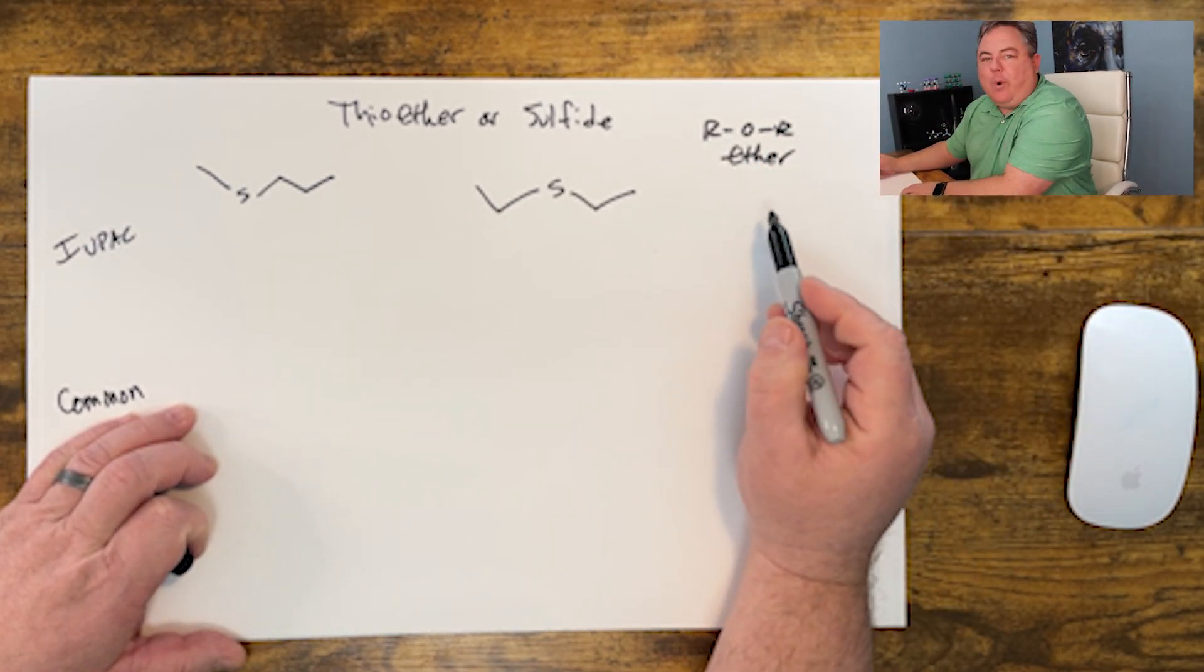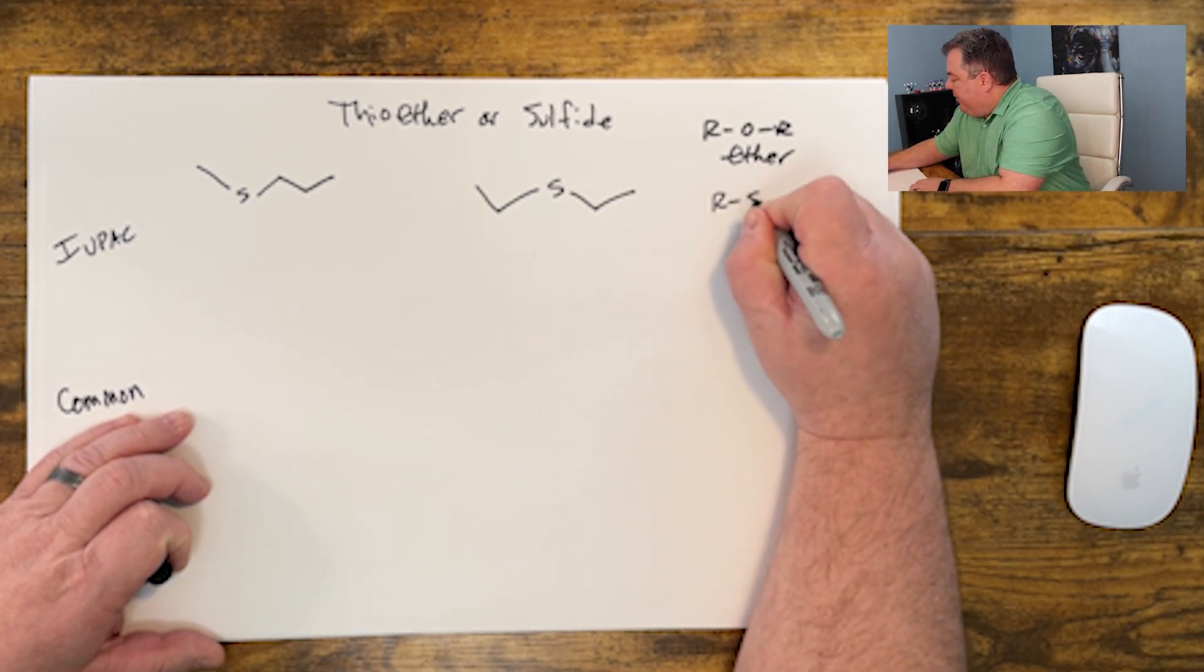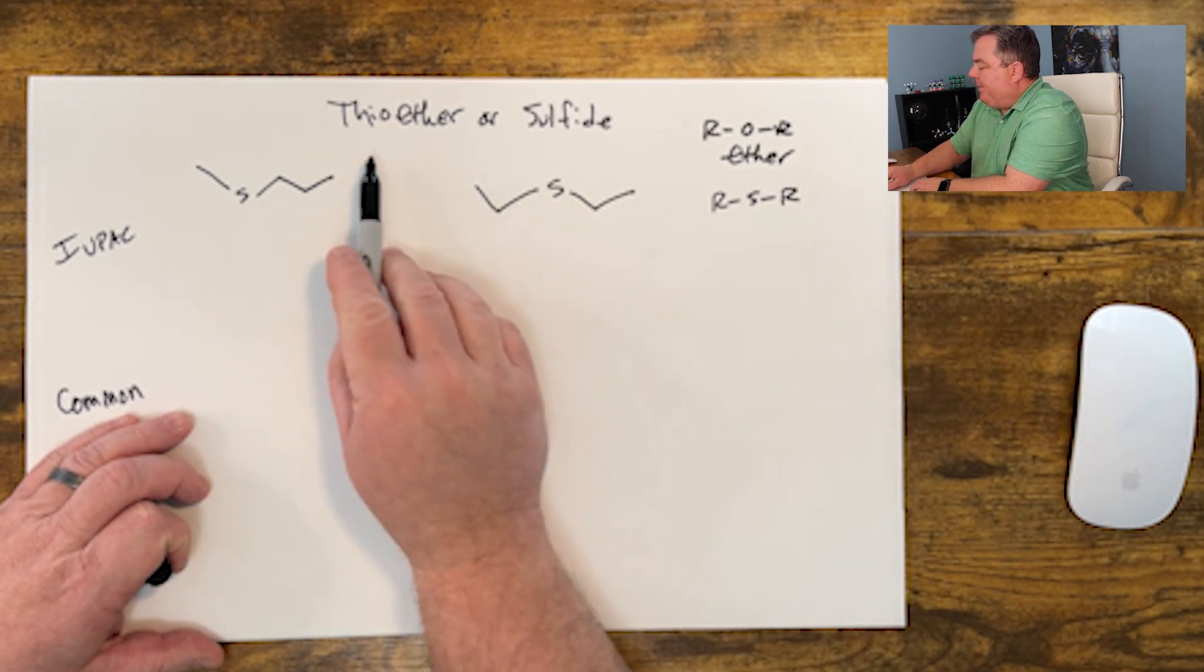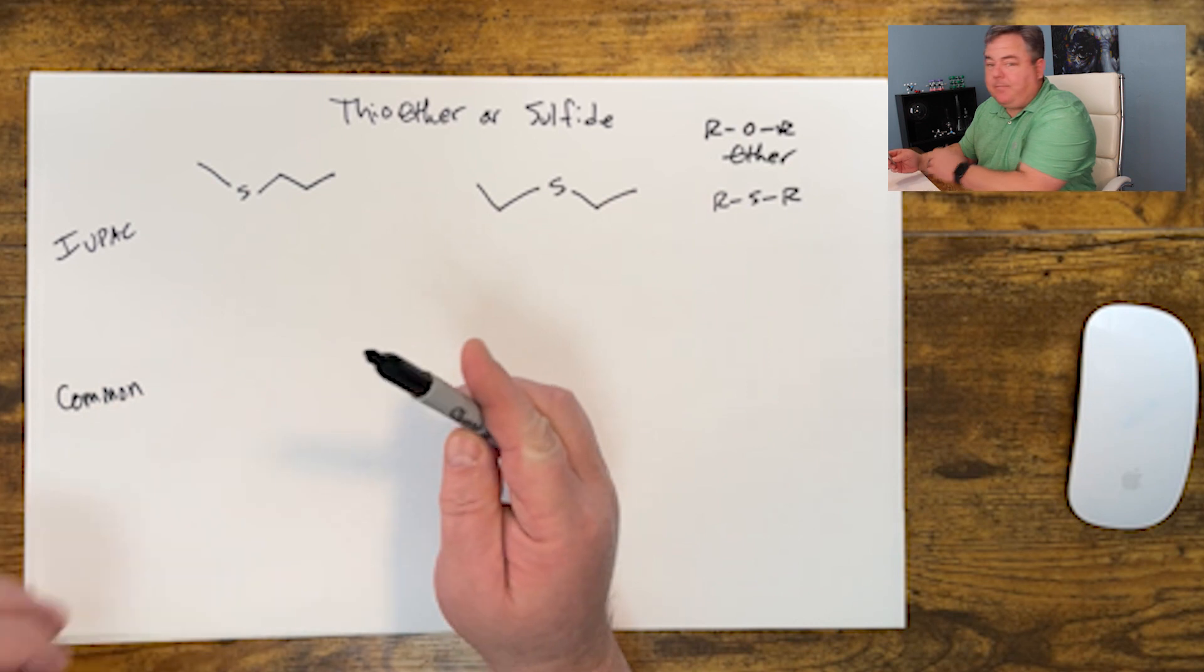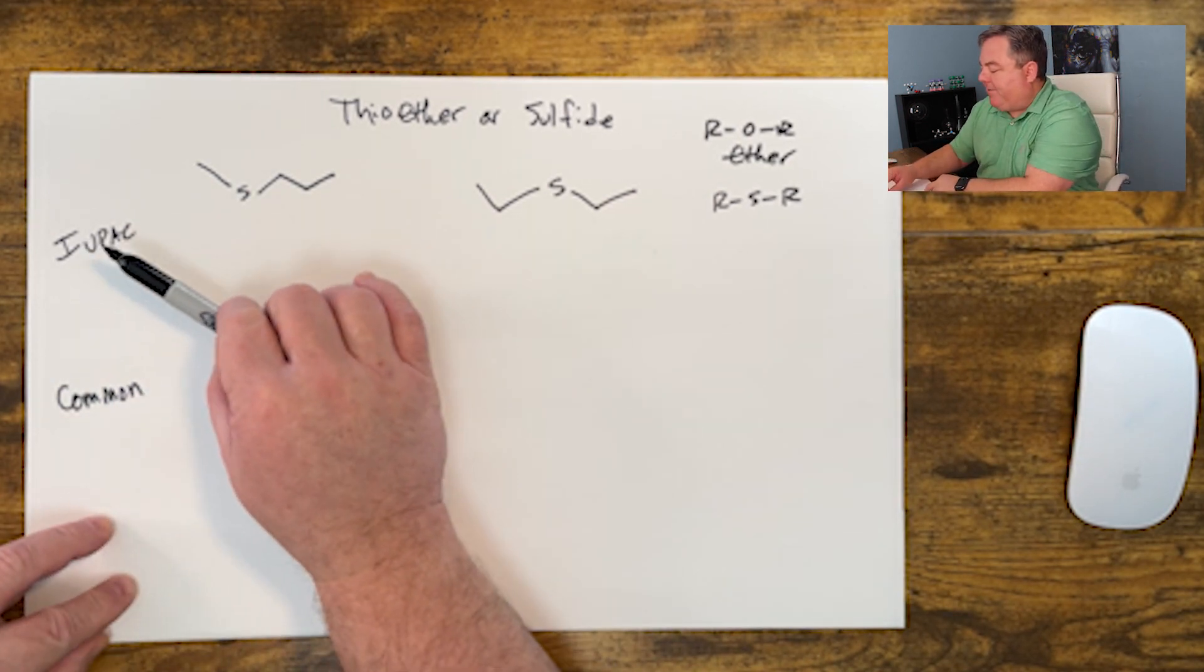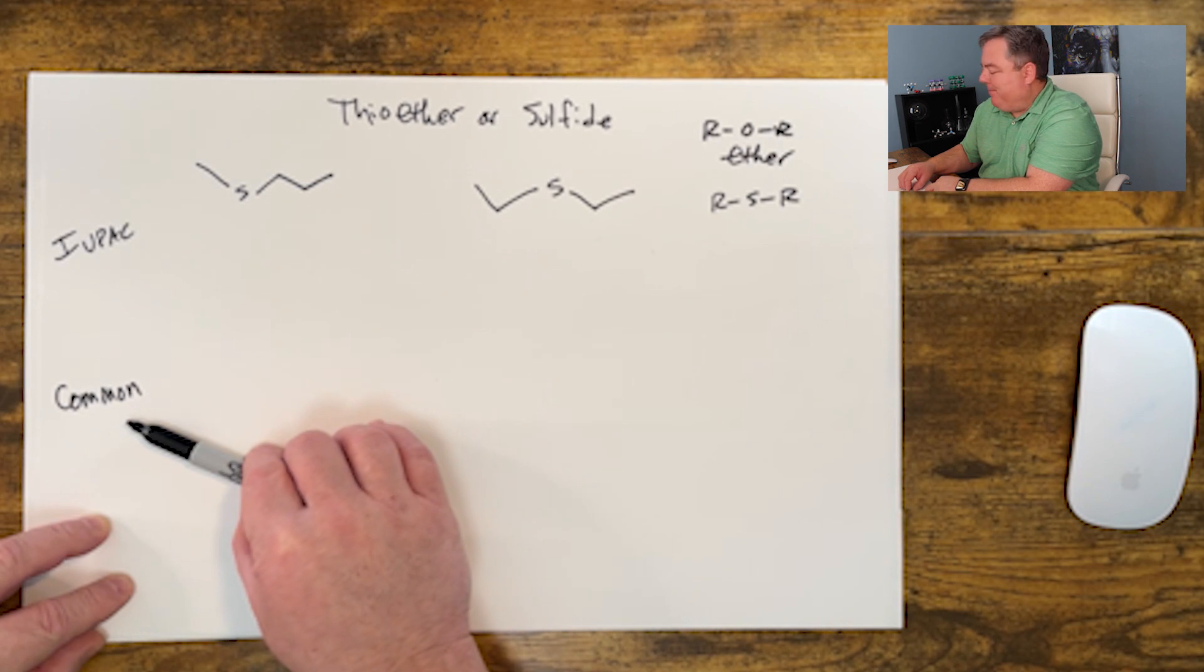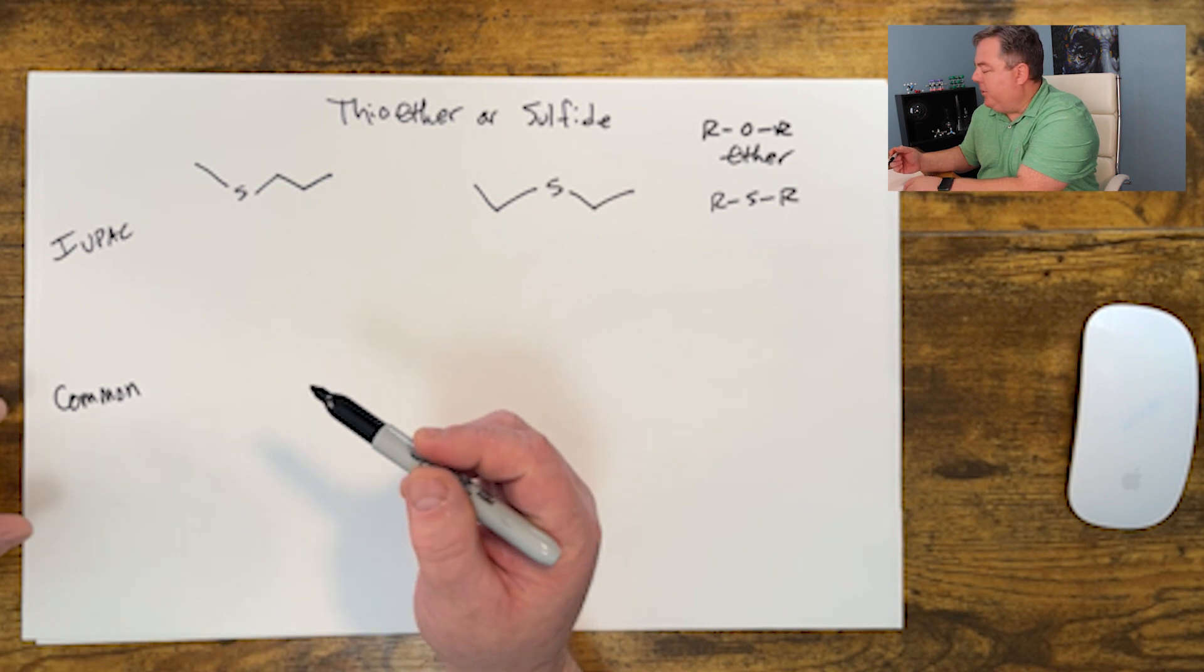But because sulfur is right below oxygen in the periodic table, a thioether could be carbon-sulfur-carbon. We also call those sulfides. Like most things, we have a technical IUPAC way of naming them and a common way of naming them. If we know how to name ethers, this is very similar, so quite easy to do.